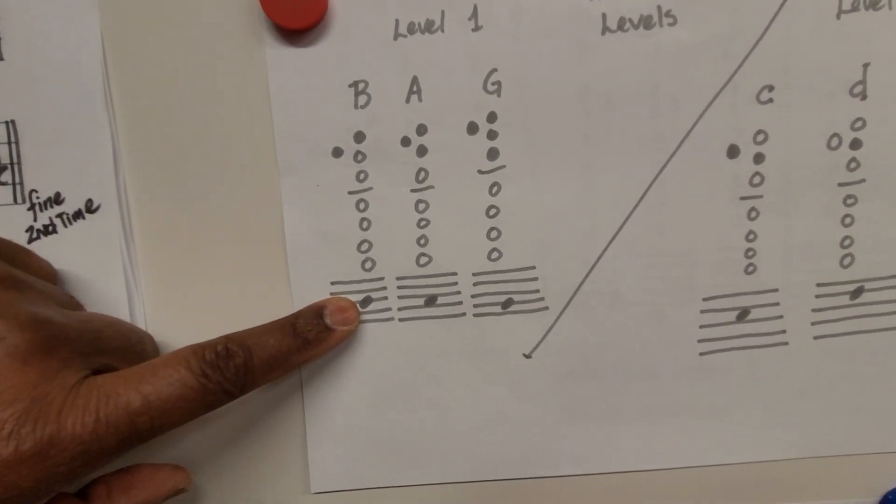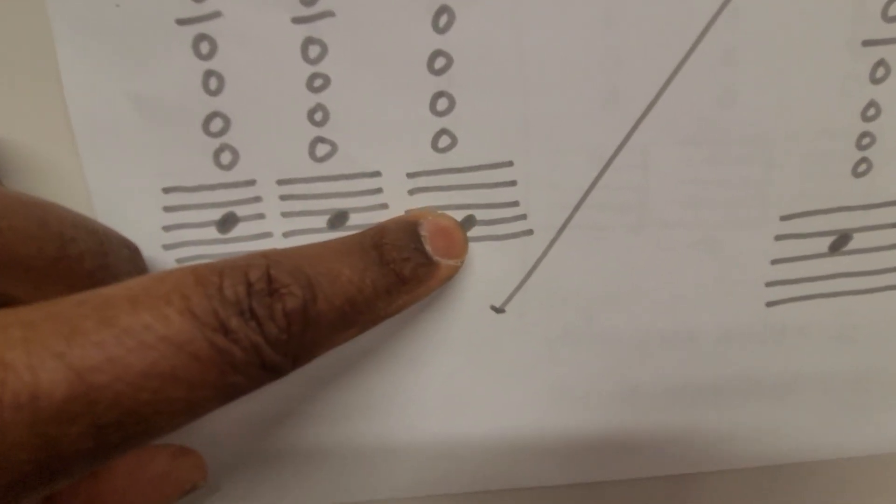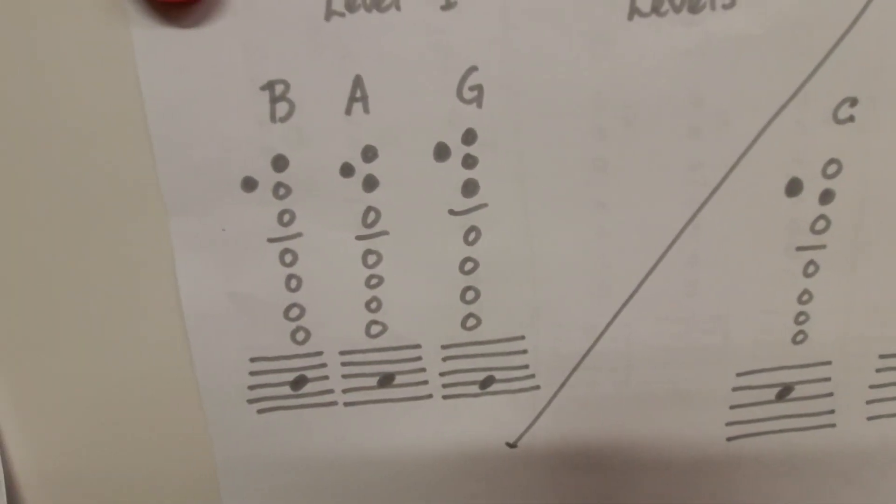This is what it looks like: B, second space, A, second line, G. All right, B, A, and G.